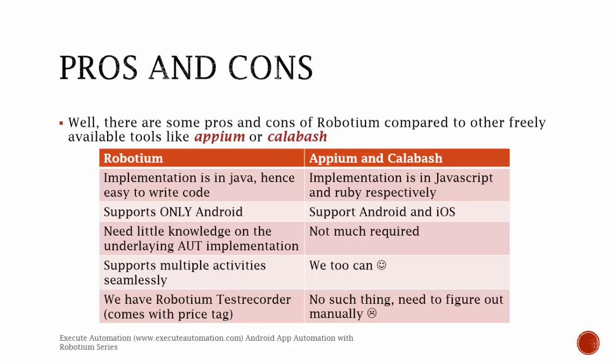Robotium also has a test recorder, but that's proprietary software — you need to download it with a license from the robotium.com website. With Appium or Calabash, no such recorder exists and you have to figure things out manually. These are some of the pros and cons of Robotium compared to Appium and Calabash — there may be more, so if you have additional points please add them in the comments below.